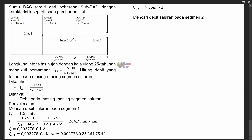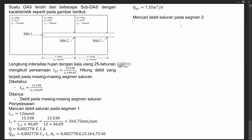Pertama kita akan mencari waktu konsentrasi yang terukur pada inlet 2. Waktu konsentrasi adalah waktu yang diperlukan agar hujan yang jatuh pada titik terjauh dari DAS yang bersangkutan bisa sampai pada tempat pengukuran atau inlet. Pada segmen 2, tempat pengukurannya adalah di inlet 2, jadi kita mencari waktu terlama untuk butir hujan bisa sampai pada titik pengamatan ini.